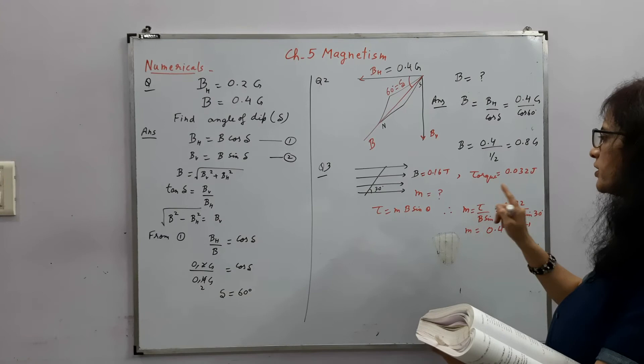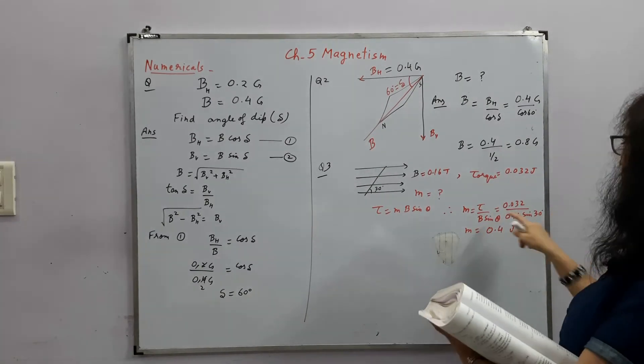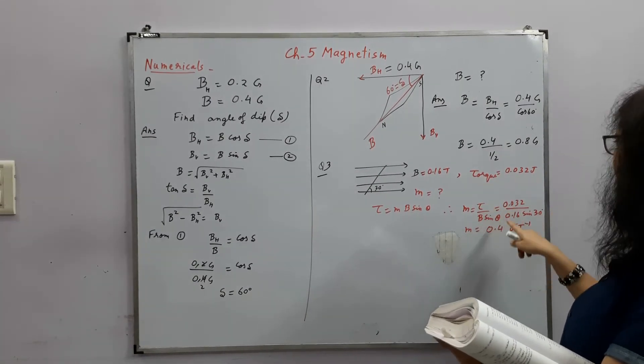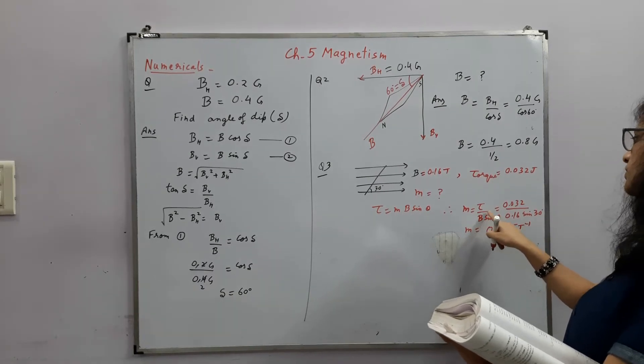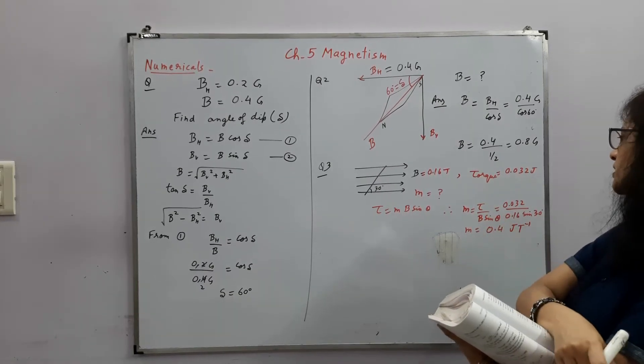So you can find it. This is torque. The unit of torque is Newton meter. So Newton meter upon, this is tesla. Newton meter upon tesla.